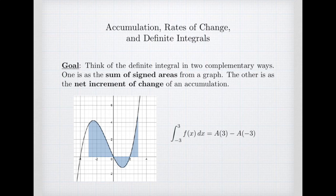We're going to have two ways of thinking about our definite integral. One is that we think of it as the sum of signed areas that comes from a graph, and the other approach is to think of a definite integral as a net increment of change of some quantity that's accumulated.